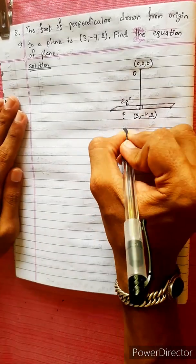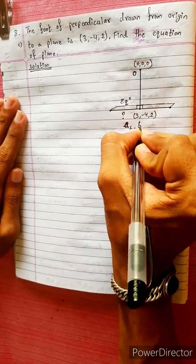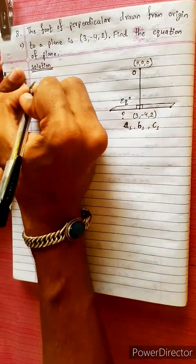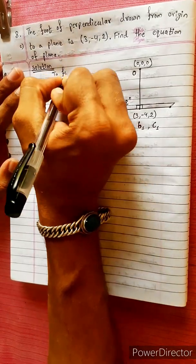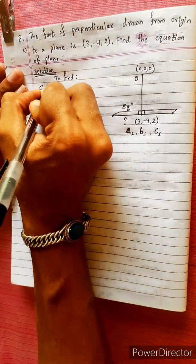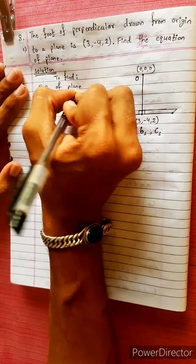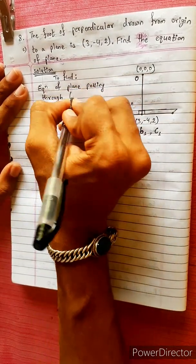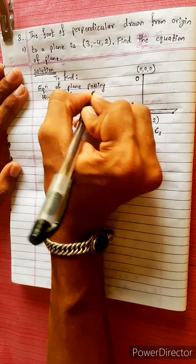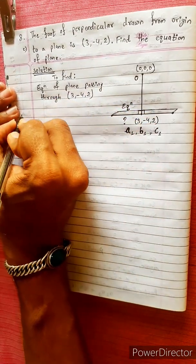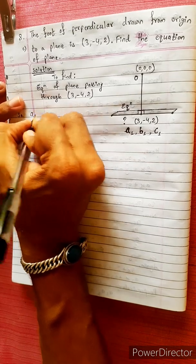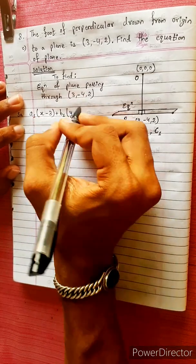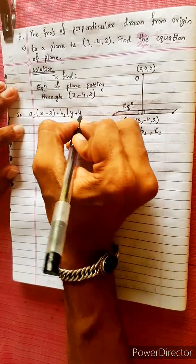Suppose we have the plane with direction ratio a1, b1, c1. We will find the equation of plane passing through the point. The equation of the plane passing through (3, -4, 2) with direction ratio a1 into (x - x1) + b1 into (y - y1) + c1 into...